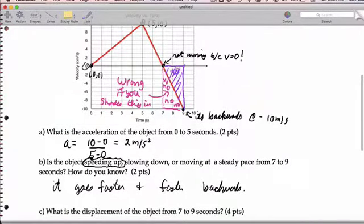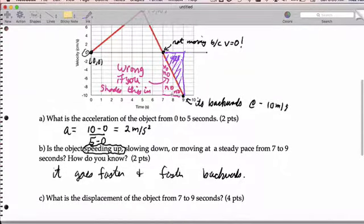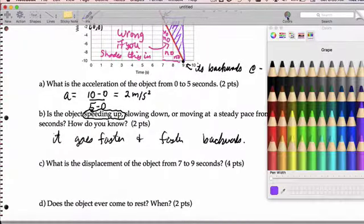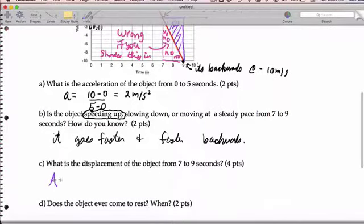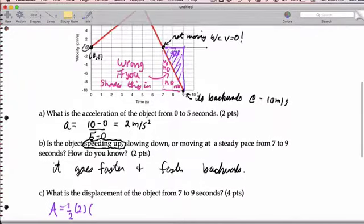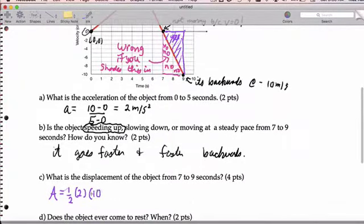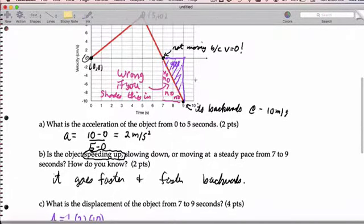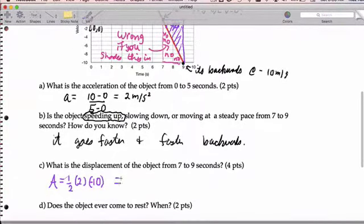Because when you're below the axis, it's negative area. This doesn't look like a negative area. That does. So now let's go ahead and get the displacement. So that area is going to be 1 half times the base, which is 2, times the height, which is 10. Actually, negative 10 since it's below the line. And so when we calculate that, we're going to actually end up getting an area of negative 10 meters.